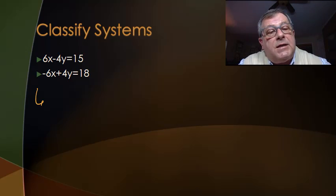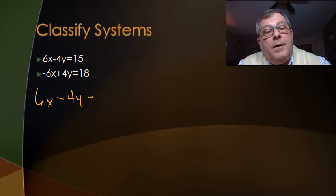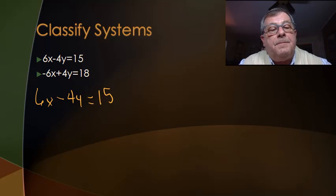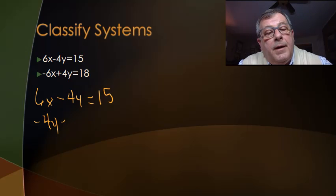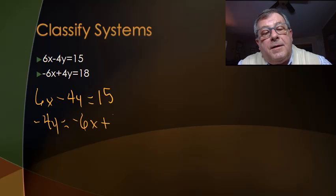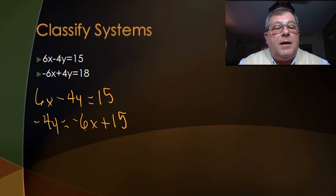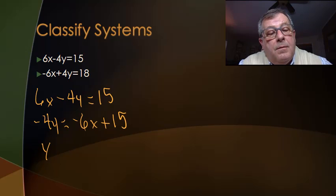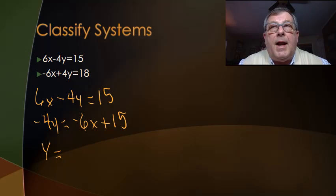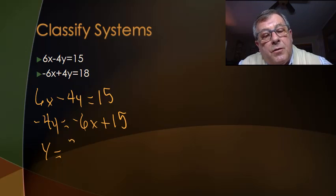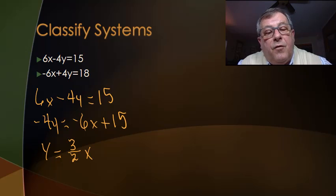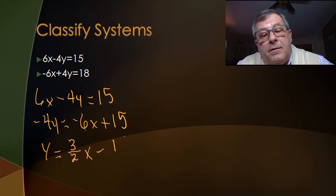We've got the first equation: 6x minus 4y equals 15. I want to get it in slope-intercept form, y equals mx plus b. I'm going to subtract 6x from both sides, giving me negative 4y equals negative 6x plus 15. Then I divide both sides by negative 4, leaving y equals — negative 6 over negative 4 reduces to 3 halves — so y equals three-halves x minus 15 fourths.